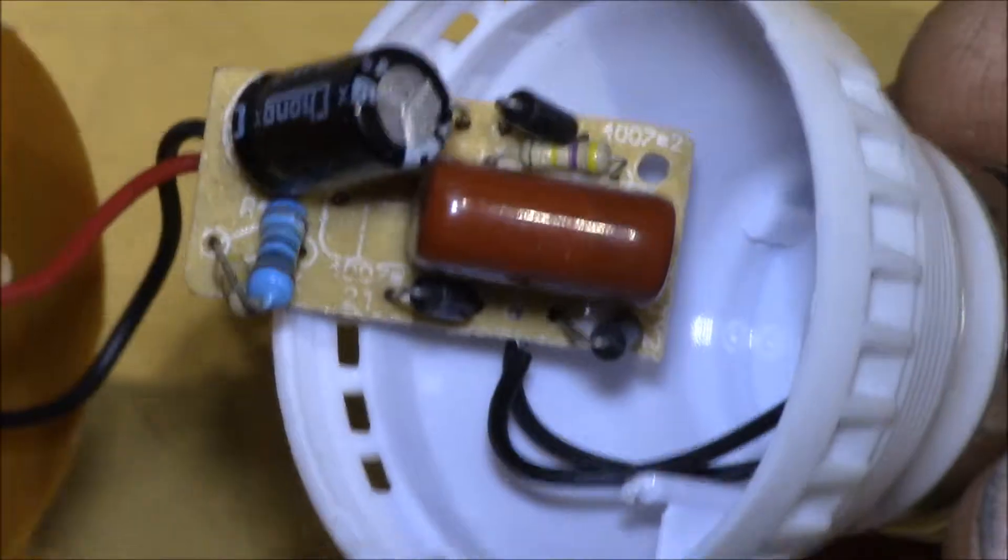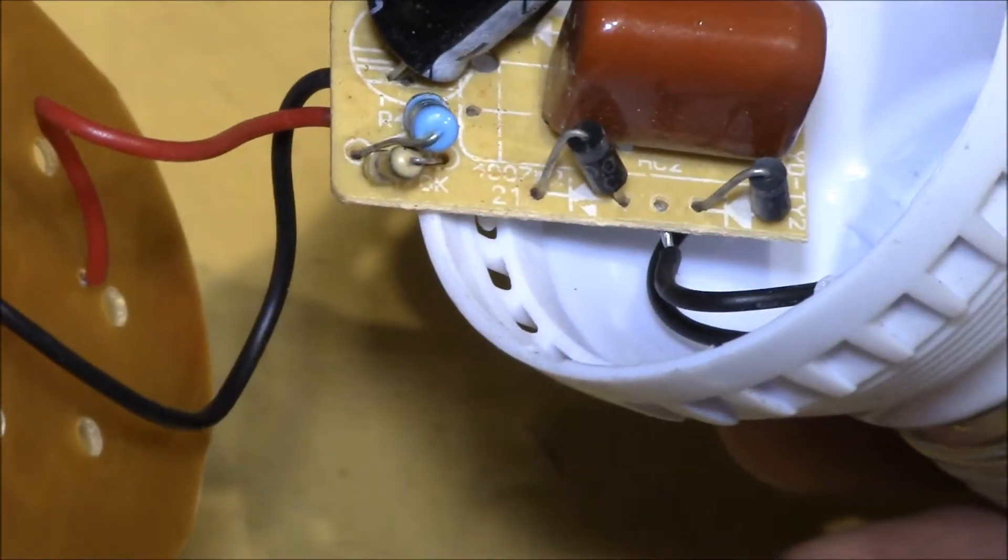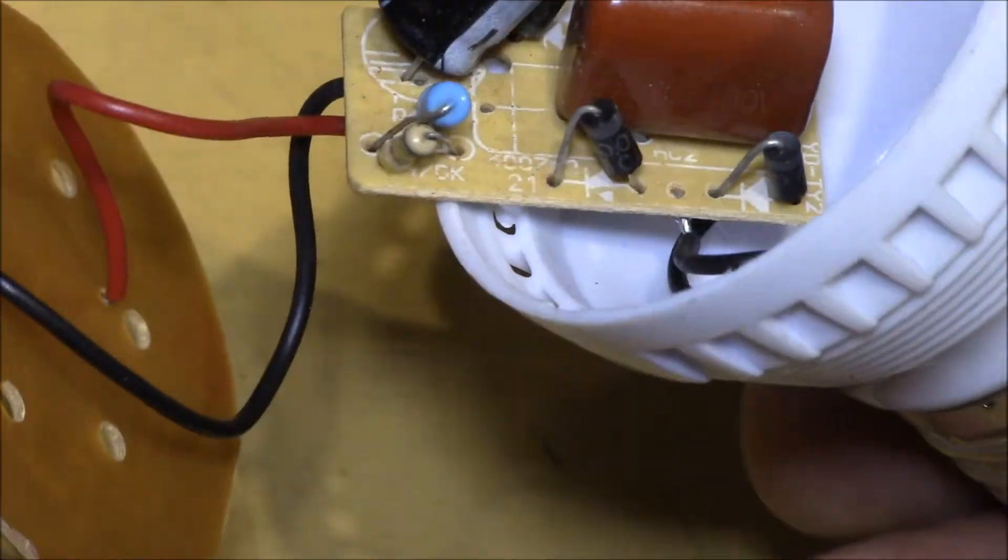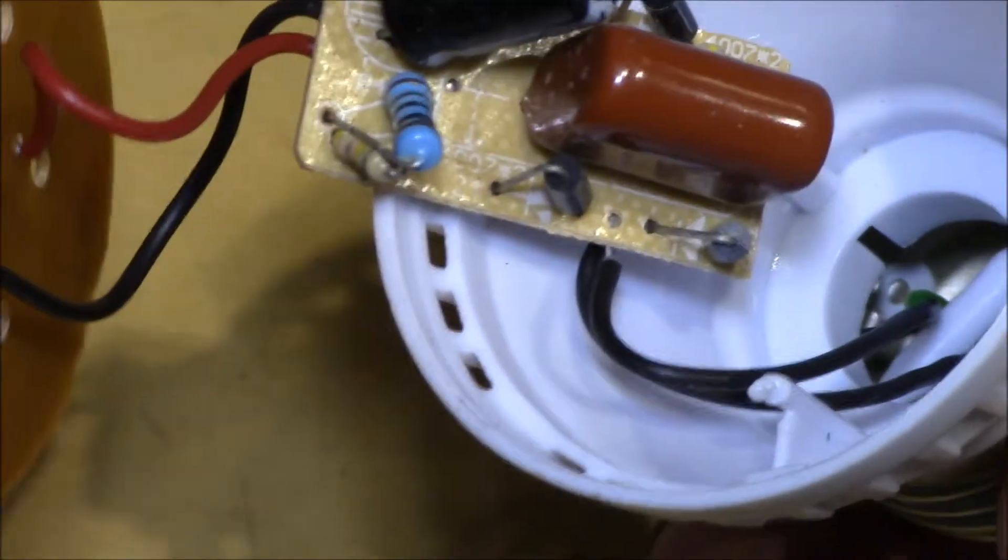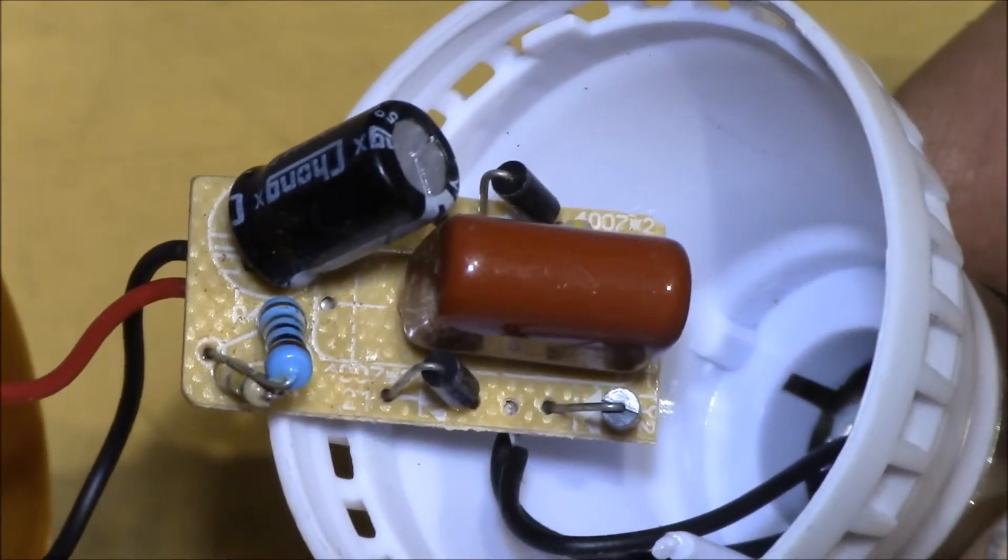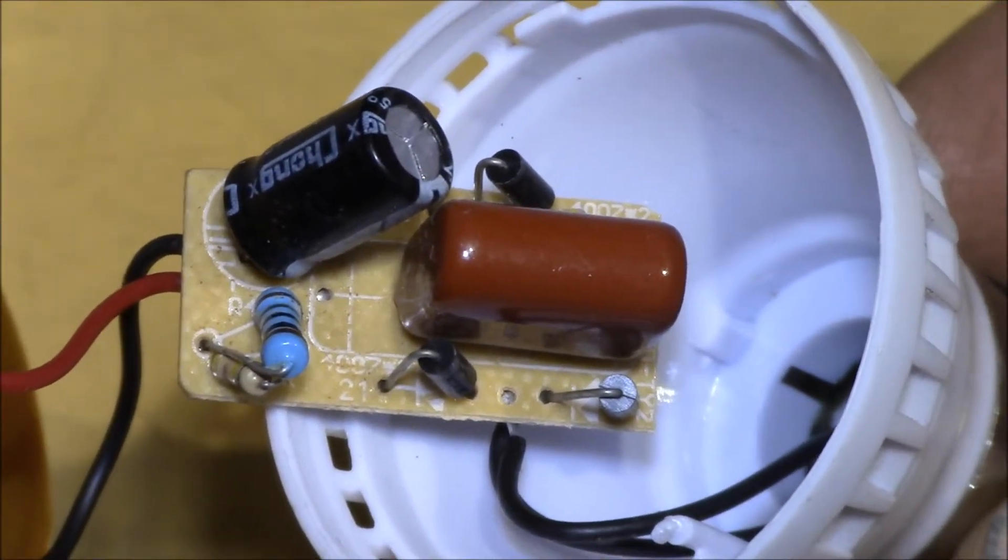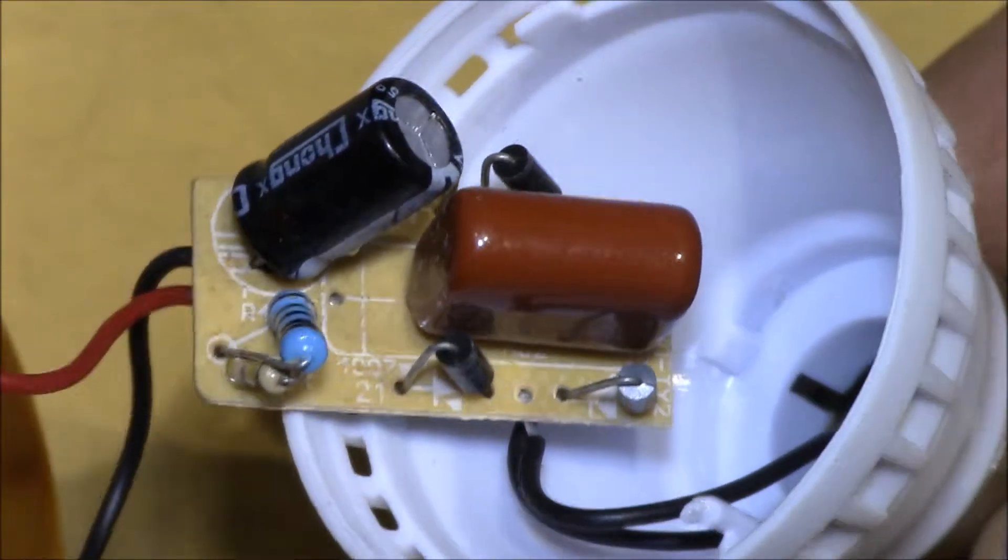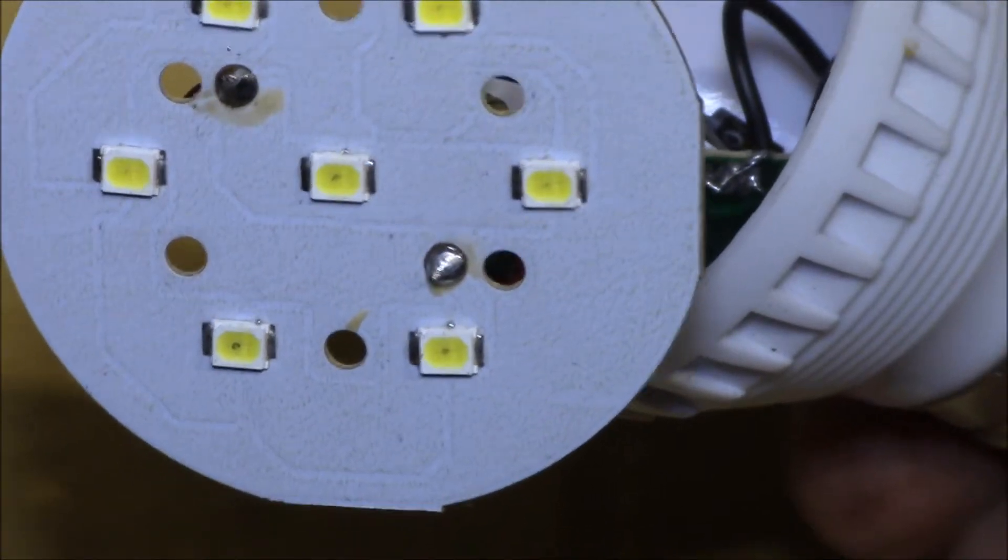They have those three resistors which must just be a voltage divider circuit for the LEDs, because you'd have about 170 volts DC coming out of that bridge rectifier. And if the LEDs need 21 volts, you've just got to burn up the rest of the voltage in heat.